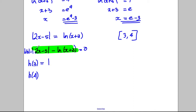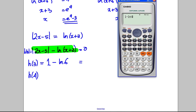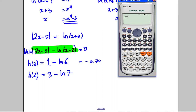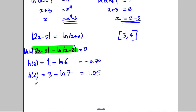Putting in x = 3: 2×3 = 6, 6 − 5 = 1, modulus of 1 is 1, minus ln(6). Calculating: 1 − ln(6) ≈ −0.79. Putting in x = 4: 2×4 = 8, 8 − 5 = 3, modulus of 3 is 3, minus ln(7). We get approximately 1.05.